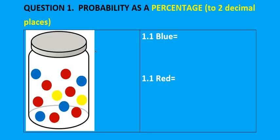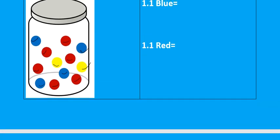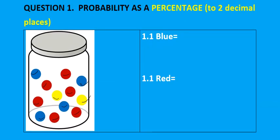We've got a bottle this time with marbles, and we are asked to determine the probability of getting a blue marble as a percentage to two decimal places. We start by counting the marbles — the total of all the marbles — one, two, three, four, five, six, seven, eight, nine, ten, eleven, twelve. We've got a total of 12, and the 12 must be the denominator, or the bottom part of the fraction.